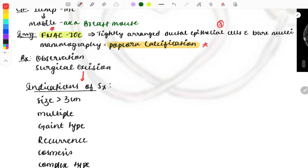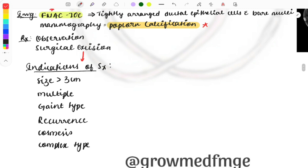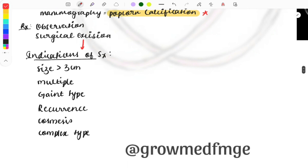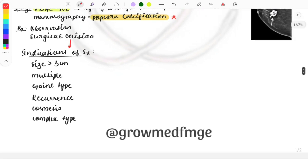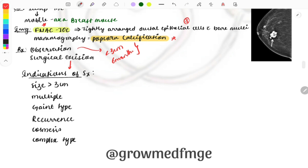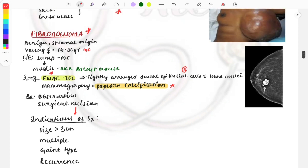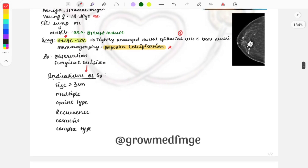Treatment is observation or surgical excision. Indications for surgery: size more than 3 cm, multiple, recurrence, cosmetic reasons, and complex type. We do observation if size is less than 3 cm with no increase for six months. If size increases day by day, we do surgical excision. This is a must-know topic asked multiple times.